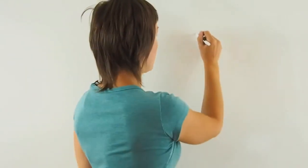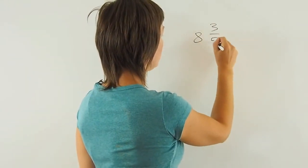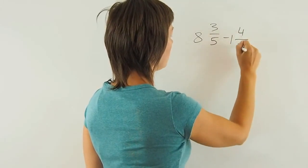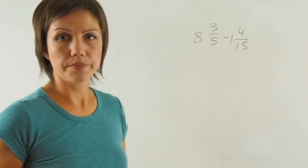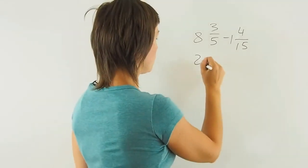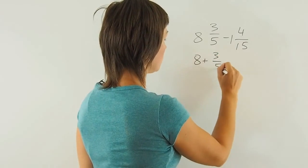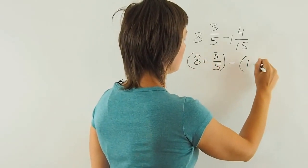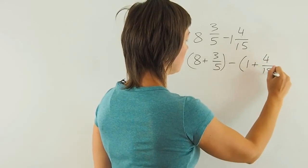Let's now subtract mixed numbers. 8 and 3 fifths minus 1 and 4 fifteenths. Now, I will split up each one of those mixed numbers into its whole part and a fraction. 8 plus 3 fifths minus 1 plus 4 fifteenths.